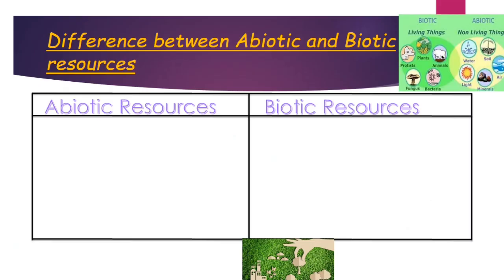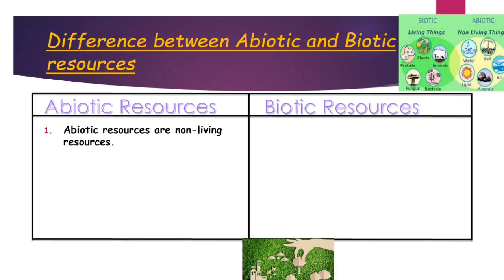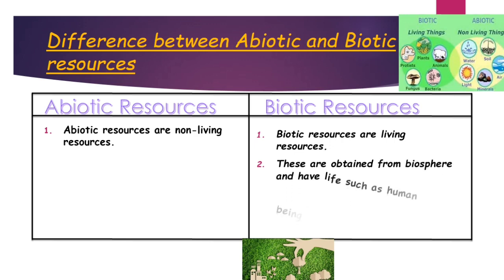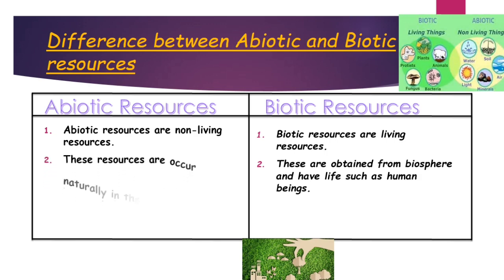Now let's discuss biotic and abiotic resources. Abiotic resources are non-living resources, whereas biotic resources are living resources. Abiotic resources occur naturally in the environment and are not created or produced by humans or human activity, whereas biotic resources are obtained from the biosphere and have life, such as human beings.